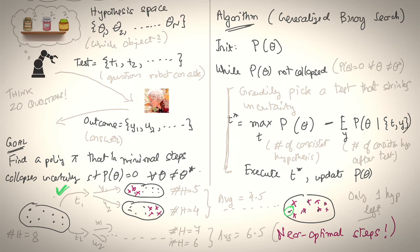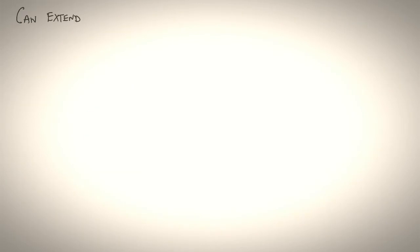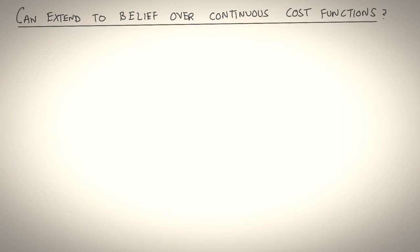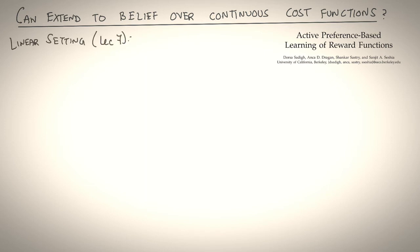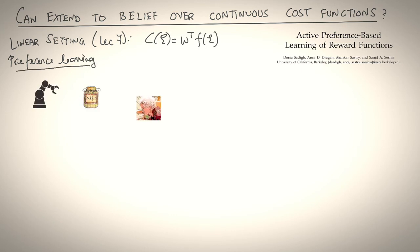So in the example we just looked at, we had a discrete number of hypotheses. The question is, would this idea extend to a regime where we have a continuous set of hypotheses? For example, we are uncertain about a continuous set of cost functions. The answer is yes. So there's a paper by Darcy Sadigh et al. that looks at the problem of recovering the human's latent cost functions by asking them if they prefer trajectory A or trajectory B. First of all, let's assume that we are in the linear cost setting.